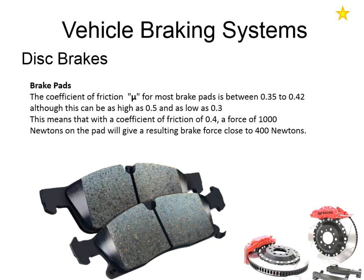Whenever we rub two surfaces together, we create friction. The amount of friction can be expressed as a coefficient of friction — that's mu (μ), the symbol you can see on screen. For most brake pads, the coefficient of friction falls somewhere between 0.35 and 0.42 μ, but it can be as high as 0.5 or as low as 0.3. If we fit a brake pad with a coefficient of 0.3 to a car designed for 0.5, the braking system won't perform properly and pedal pressure will be much higher than it should be.